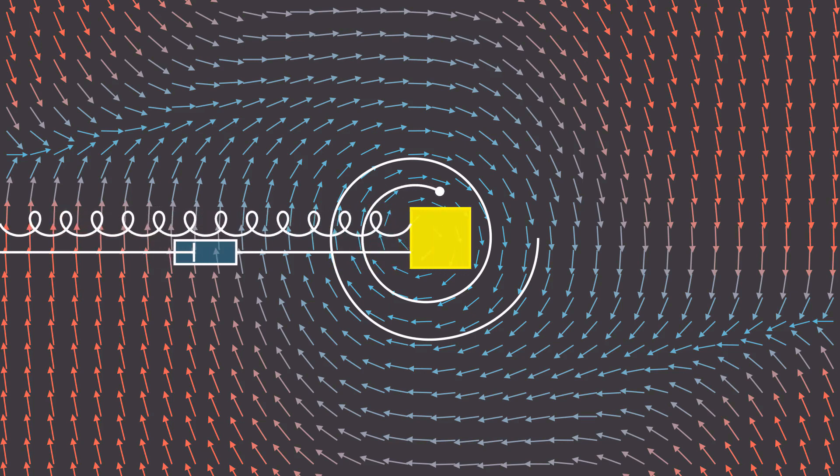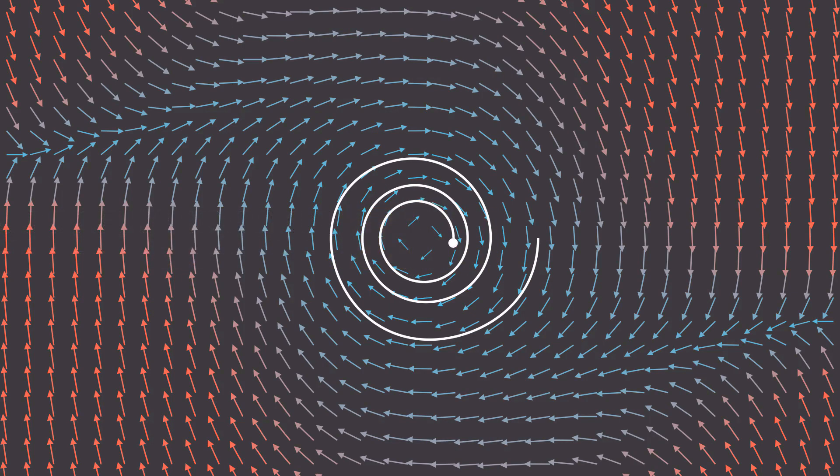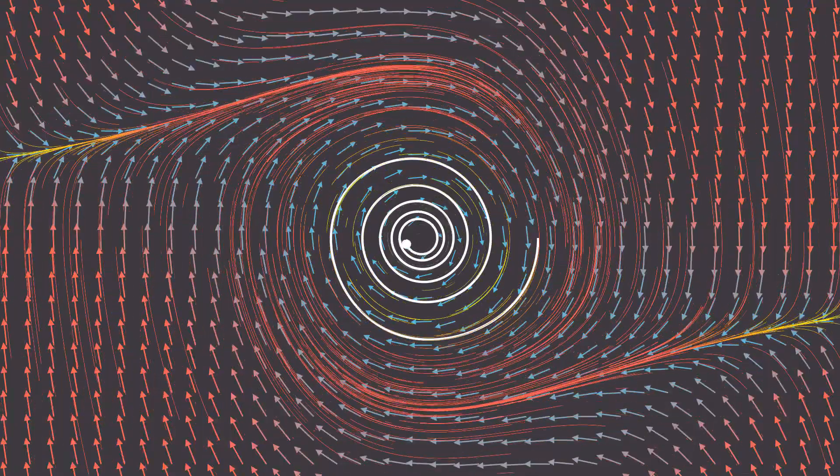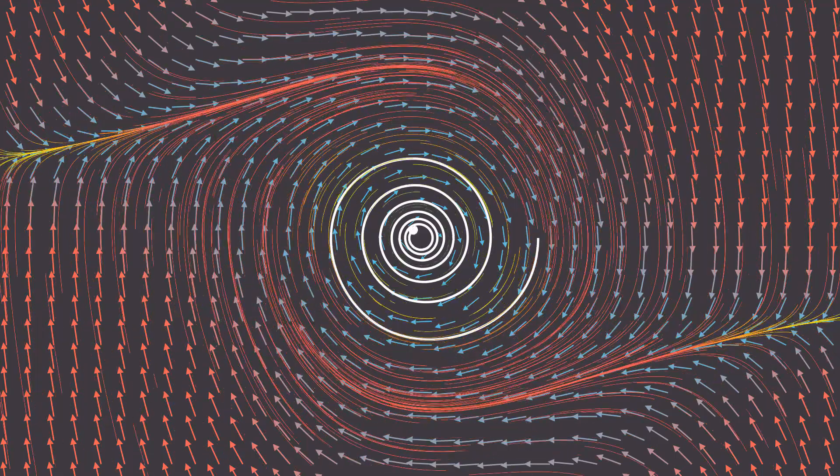And there we go, we found another method to rule out the existence of periodic orbits. But this just begs the question, is there a way to actually prove the existence of periodic orbits, rather than just disprove them? Well, yes, and we'll talk about that in the next video. Thanks for watching.